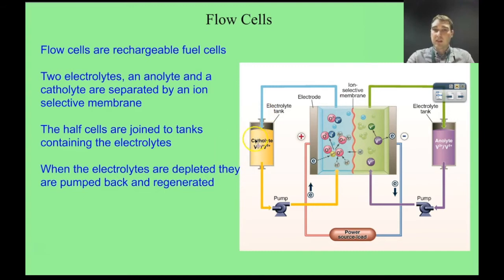Anolyte on this side, catholyte. And they provide the anode electrolyte and cathode electrolyte to the flow cell. Once you run out of your anolytes and your catholytes, you can pump them back through in the opposite direction of the fuel cell. And then you'll regenerate them and then you can use them again and again.